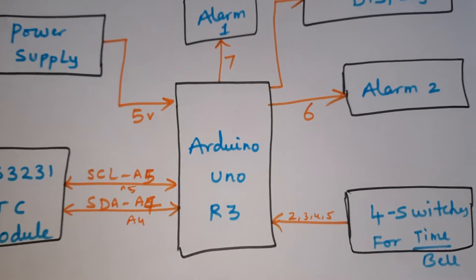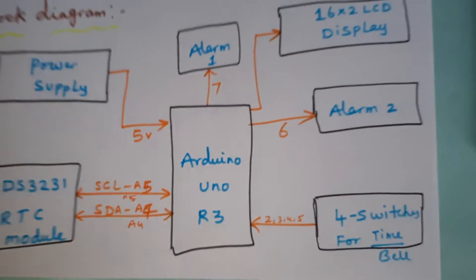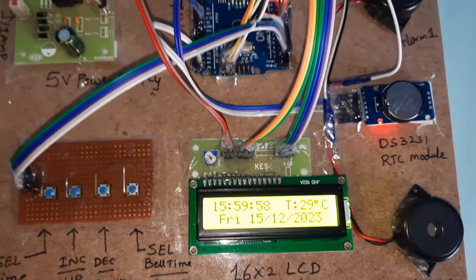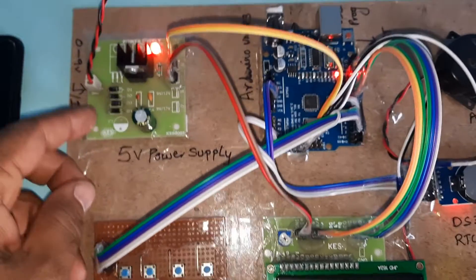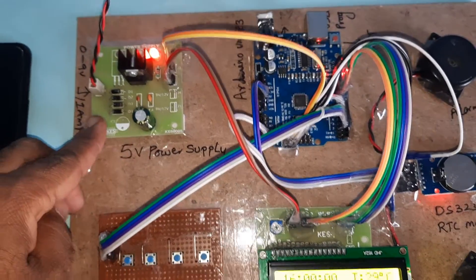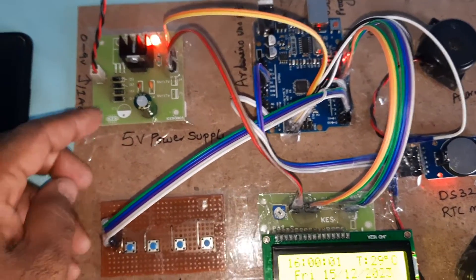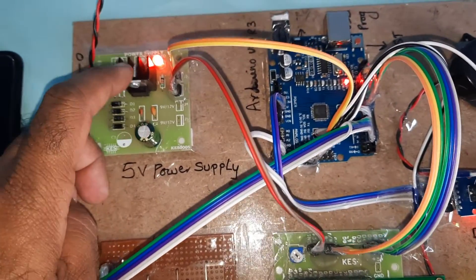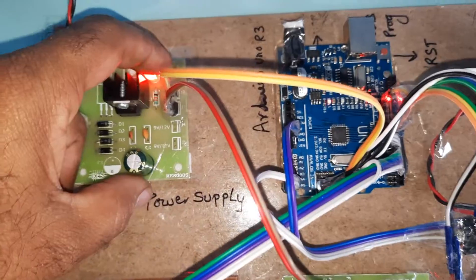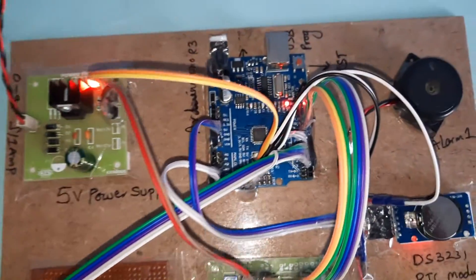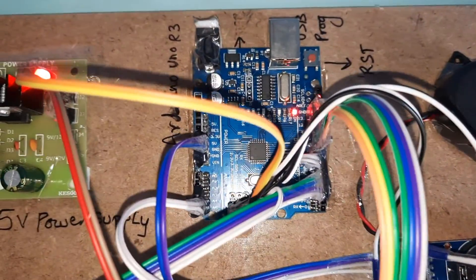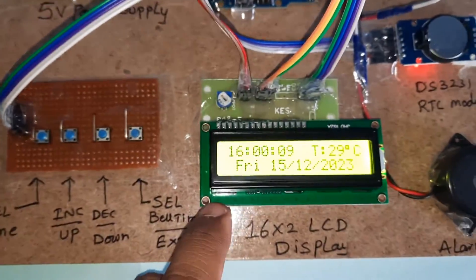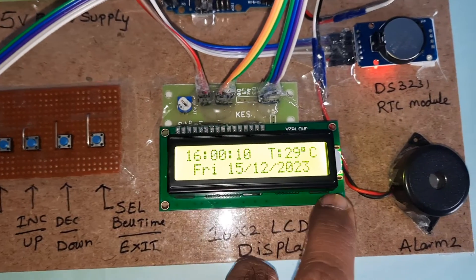And one timer select. Coming into the hardware part, here we are using one adapter power source, bridge rectifier, filter capacitor, 7804 regulator, one LED, 5-volt power supply module, Arduino UNO R3 board, and one 16x2 LCD display.